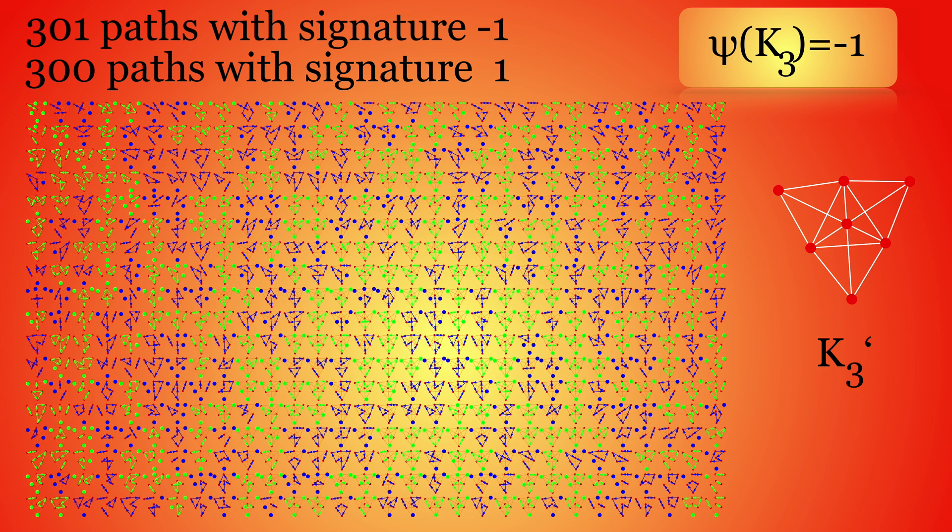Here we see the Fredholm paths of the connection graph G' of the triangle equipped with the usual Whitney complex. The connection graph is a graph with 7 vertices. There are already 601 terms in the Leibniz sum of the Fredholm determinant. 301 of them have odd signature while 300 have even signature. The Fredholm characteristic of the triangle is 300 minus 301, which is minus 1.